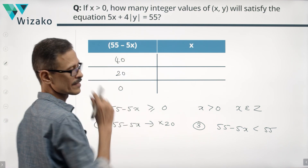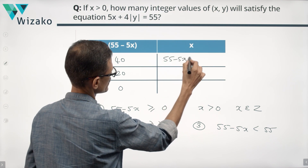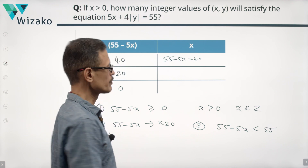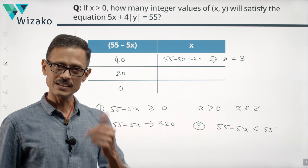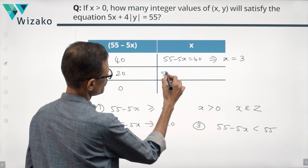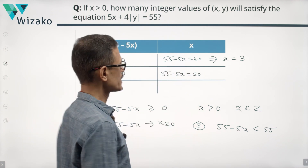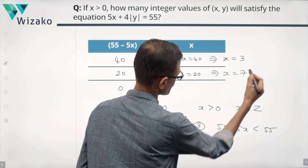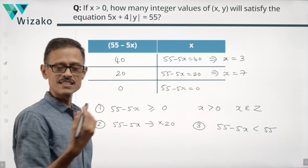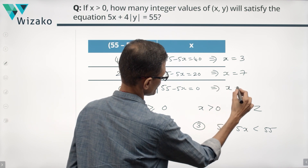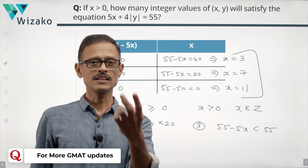Now we compute x for each case. If 55 minus 5x equals 40, then 5x equals 15, so x equals 3 — a valid positive integer. If 55 minus 5x equals 20, then 5x equals 35, so x equals 7. For the last case, if 55 minus 5x equals 0, then 5x equals 55, so x equals 11. So x can take three values: 3, 7, and 11.